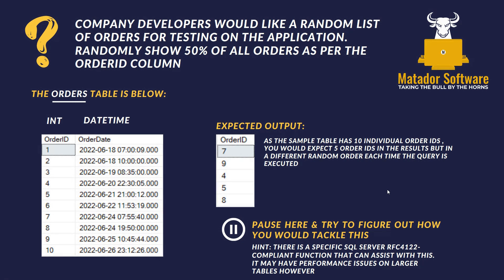Here's this episode's more intermediate question. Company developers would like a random list of orders for testing on the application — randomly show 50% of all orders as per the order ID column. So we want a random assortment of 50% of our order IDs, which is five orders, and it can be any. This is real world, because you'd usually have a transactional SQL database and a proprietary app where people would likely want to test this. Remember, you might not return the same results because we get random results, but you'd want that 50%. There's a hint: there's a specific SQL Server RFC4122-compliant function that can assist with this. Note this particular solution may have performance issues on larger tables.